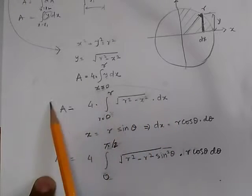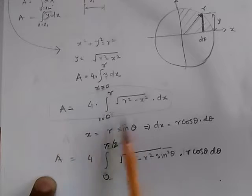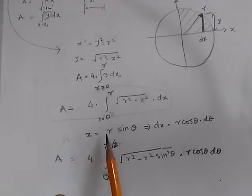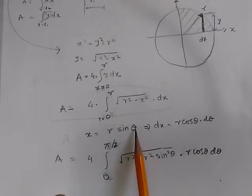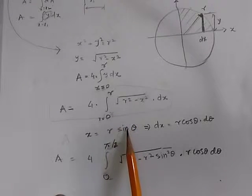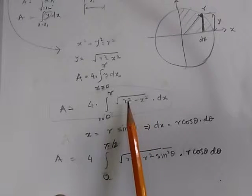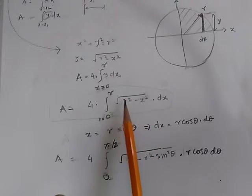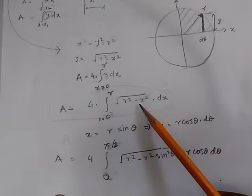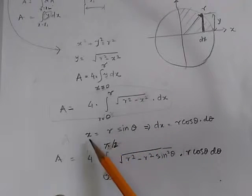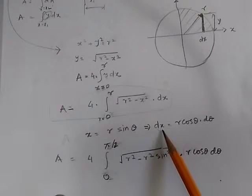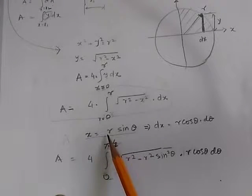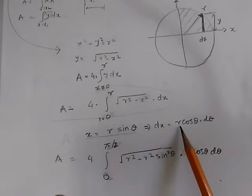To do this integration, we use a trigonometric substitution. The best simplification is to substitute x = r·sinθ. When we do this, r² - r²·sin²θ = r²(1 - sin²θ) = r²·cos²θ, and the square root simplifies to r·cosθ. That is the idea behind this substitution. Differentiating x = r·sinθ gives dx = r·cosθ·dθ, noting that r is constant throughout the circle.